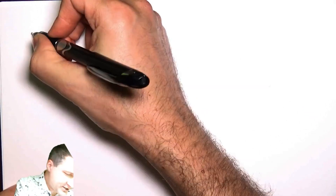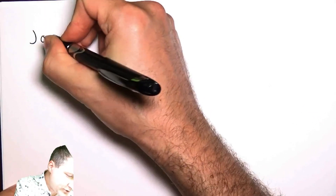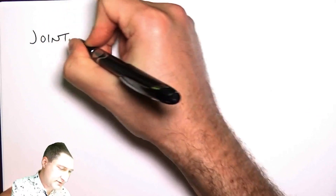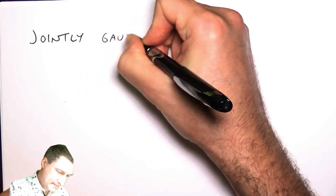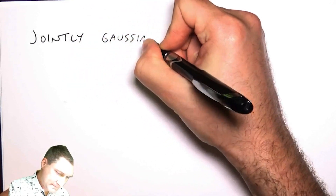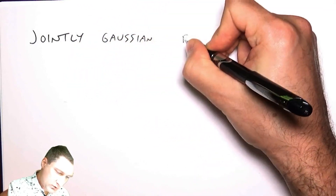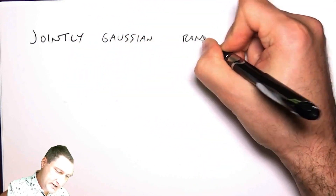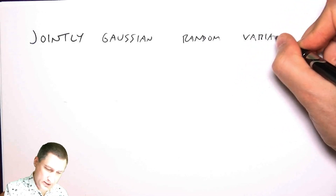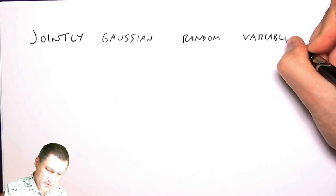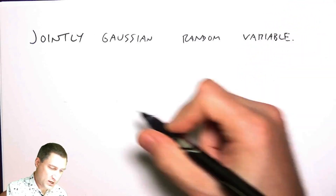Let's talk about a really important joint random variable that comes up all the time in electrical engineering, called the jointly Gaussian random variable. Remember we talked about how Gaussian random variables could be used to model noise and all sorts of real world systems?